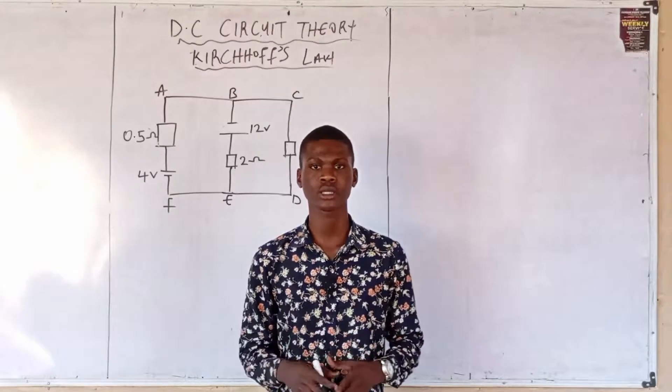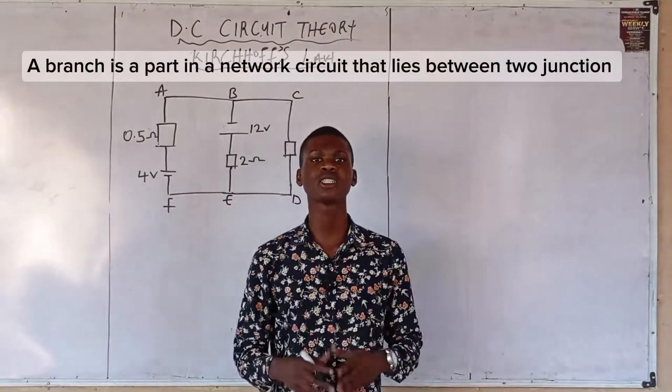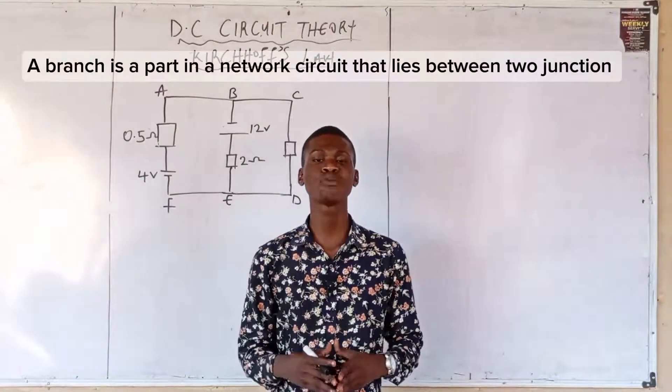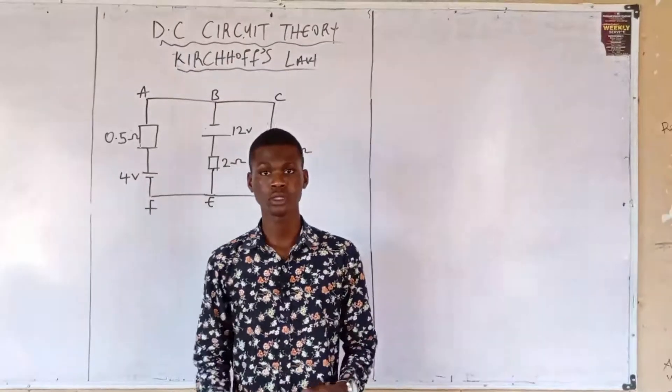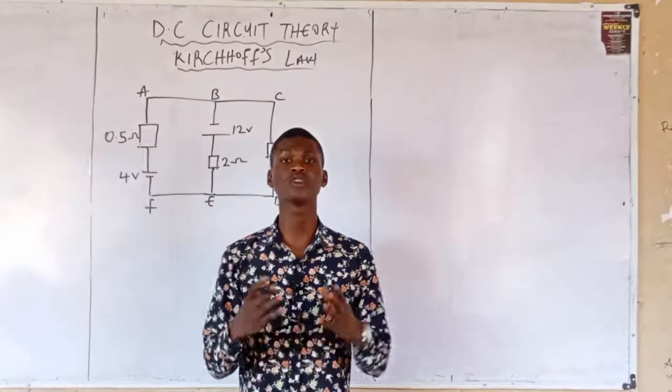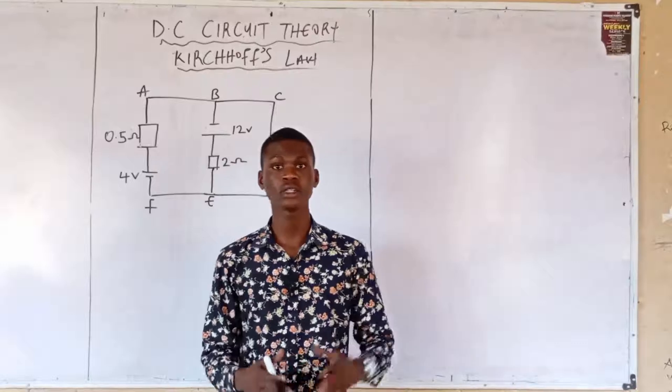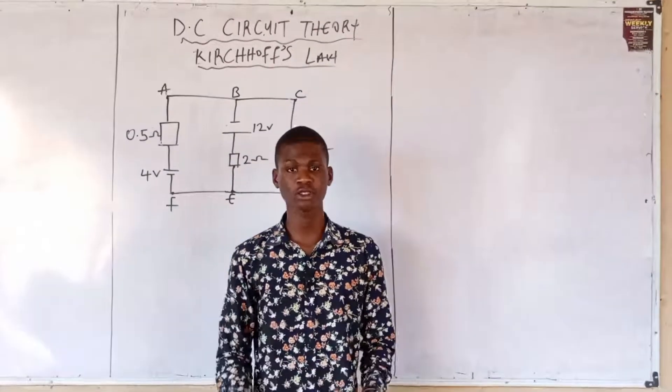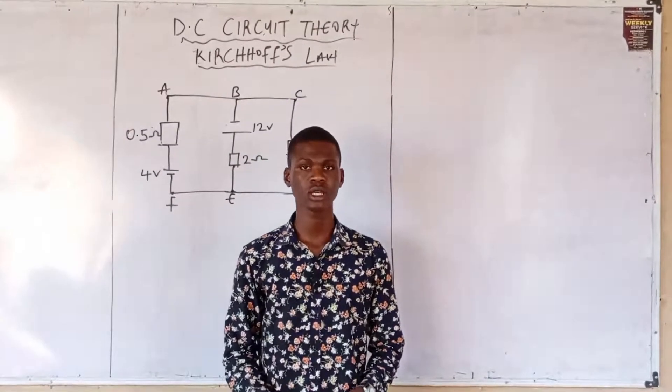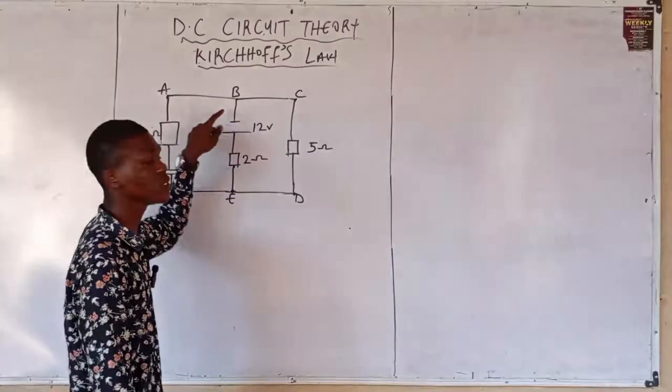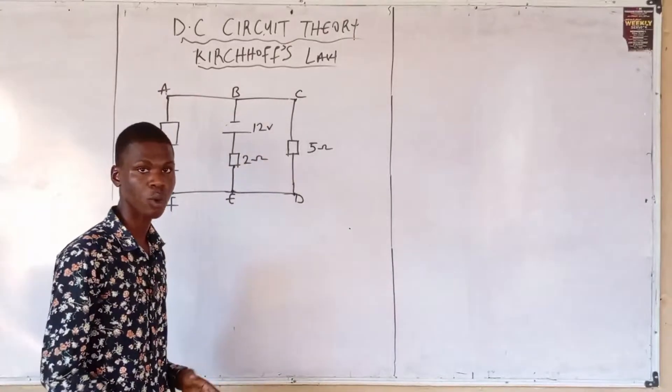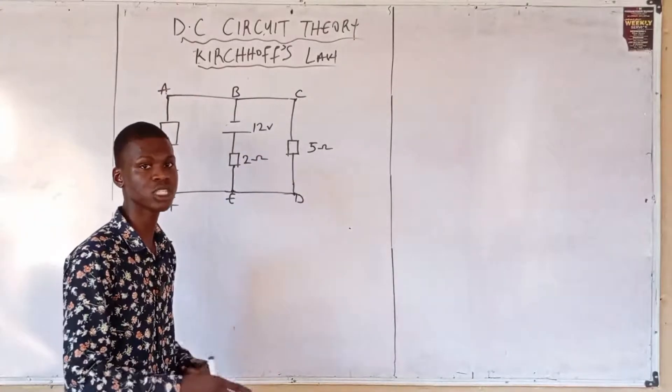Number two: branch. A branch is a part in a circuit that lies between two or more junctions. Junction is synonymous to node. By illustration, let's see what it means—a node and a branch. From here at point B, point B is a node. Why do I know that point B is a node?